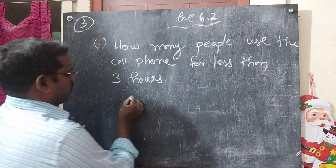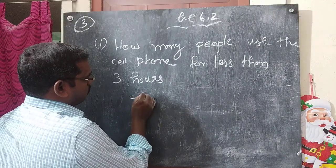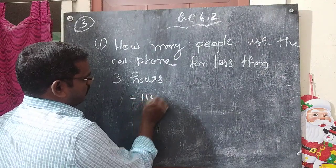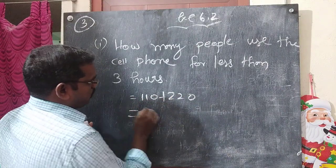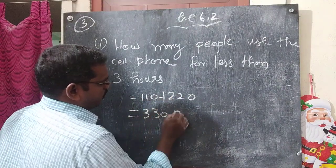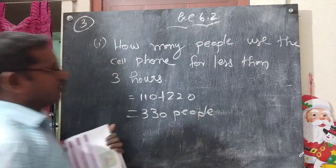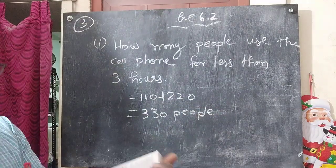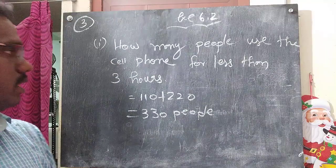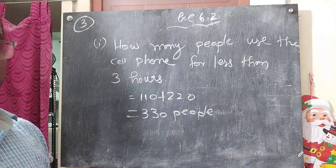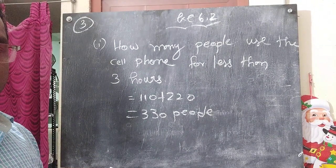This is equal to 110 plus 220, so 330 people use the cell phone for less than 3 hours. Copy down, and we'll go to the next question.